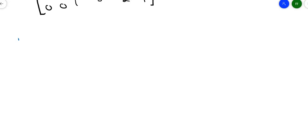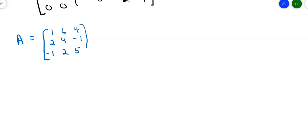Let's take a look at this matrix over here. Suppose matrix A is given as the matrix 1, 6, 4, 2, 4, negative 1, negative 1, 2, 5. And I want to find the inverse. We know what to do: take matrix A, take the identity matrix, and start row reducing.